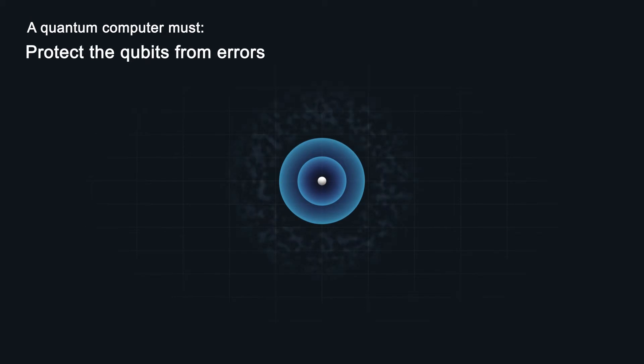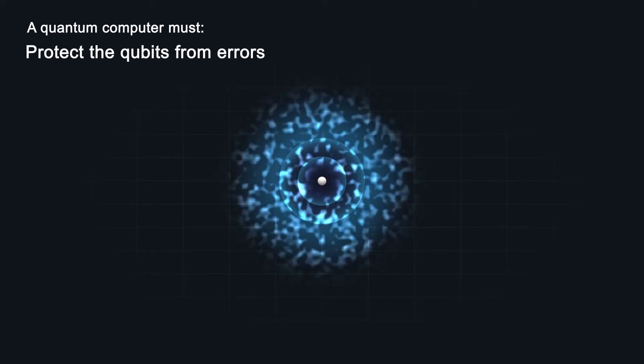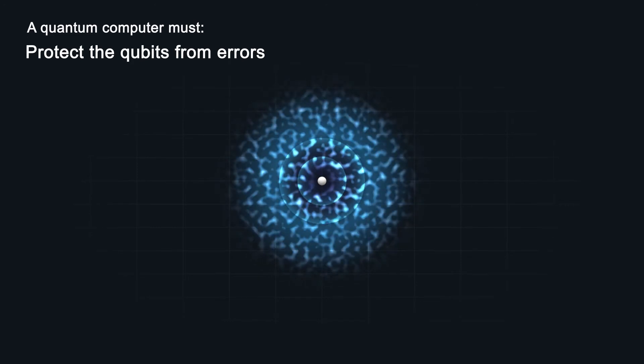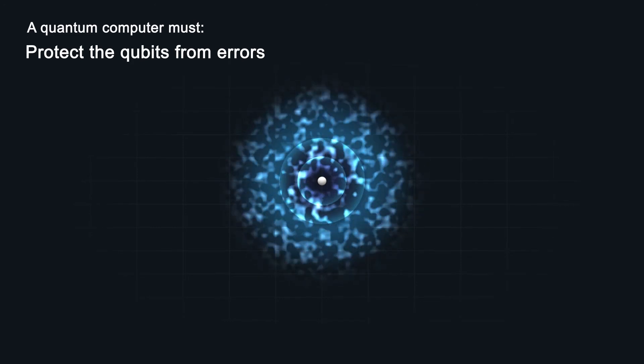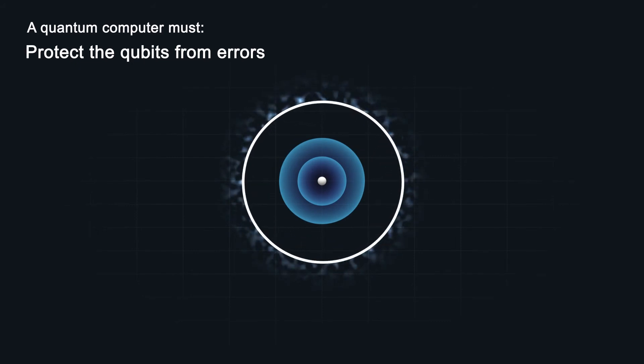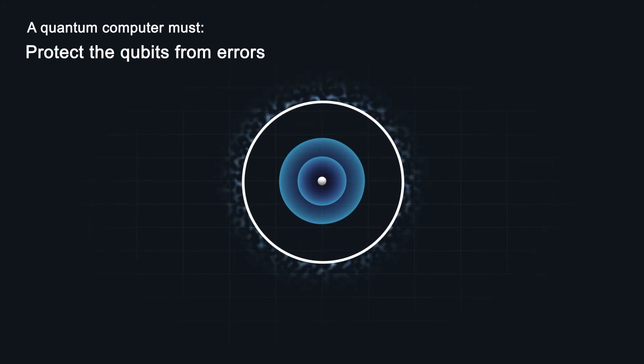The qubit's surrounding environment sometimes sneaks in and destroys the qubit state, a covert act that can ruin a computation. But some ion energy levels are naturally isolated, and scientists have come up with clever ways of adding in extra layers of protection.